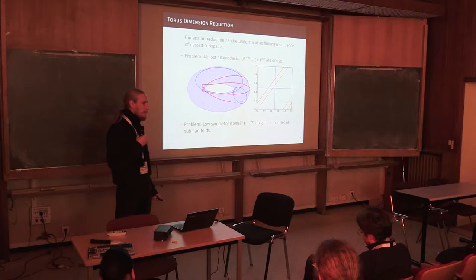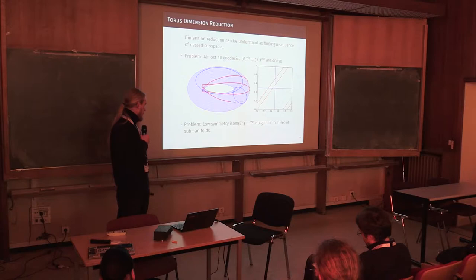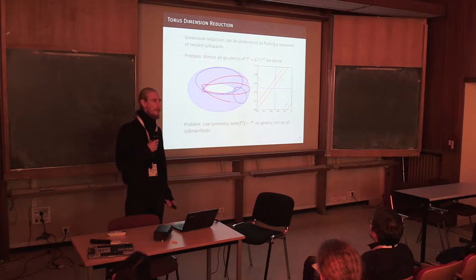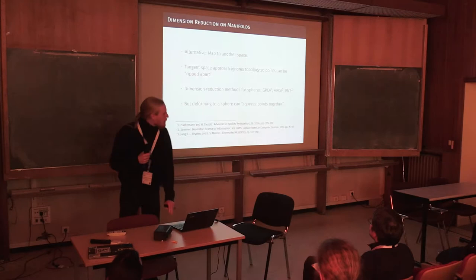This is obviously a bad feature. And also, the symmetry group of the torus is very low-dimensional—it's only the torus itself—so we don't have a generic rich set of submanifolds. Therefore, we have trouble finding a sequence of nested subspaces.